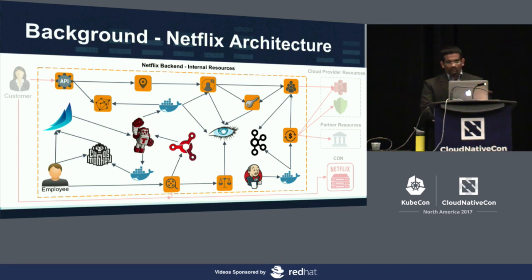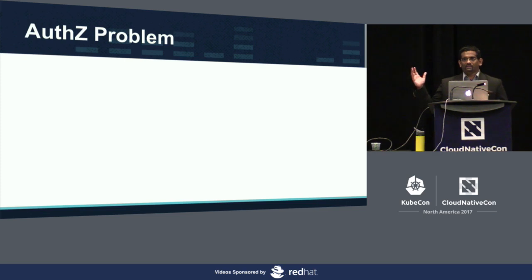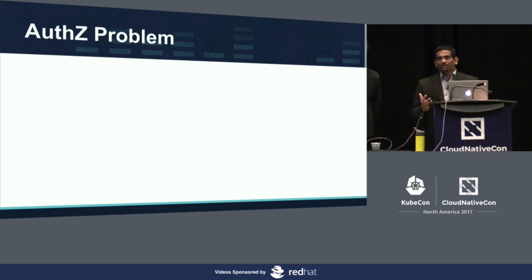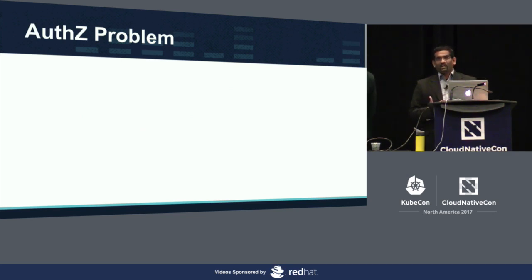What you want is a much more granular level, not just network reachability. For example, if one of these services is a REST-based service, you want to control exactly who gets to call what REST endpoint. But this is a very diverse backend where we have REST-based services, gRPC-based services, and some services that have their own custom binary protocol with no standardization. So how do you solve this problem in a world like that, where you have such a diverse set of services with random different protocols and resources?